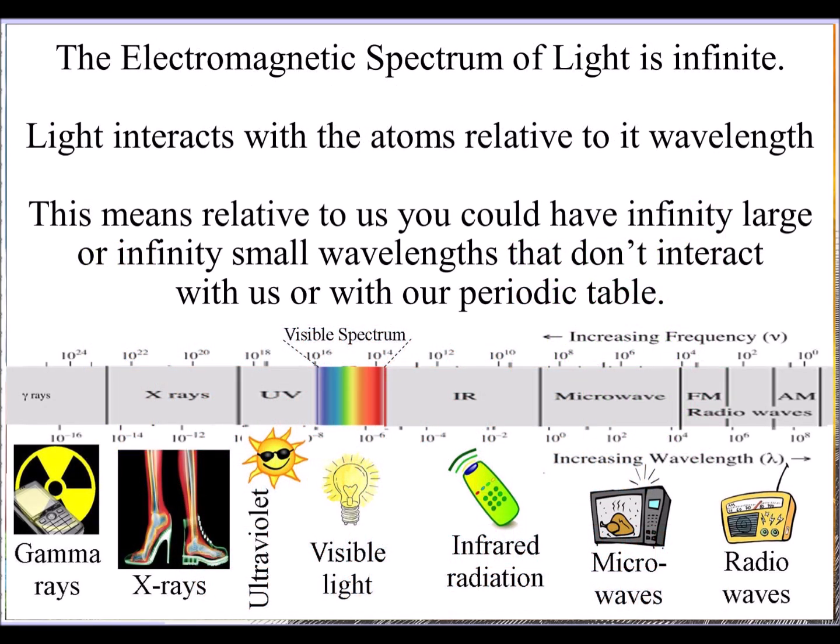But the electromagnetic spectrum of light itself is infinite. That means relative to us you could have infinitely large or infinitely small wavelengths that don't interact with us or with our periodic table.